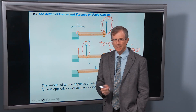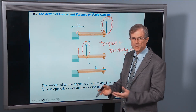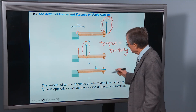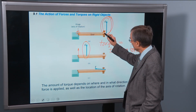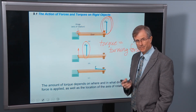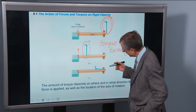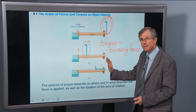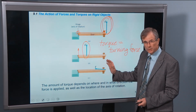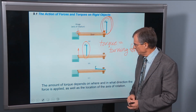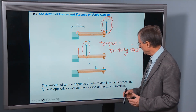That's a key hint for when torque is greatest. If you push perpendicular to the door, you get maximum effect. Whereas if you push at an angle on the end of the door, you're not going to get much turning force. So the amount of torque depends on where and in what direction the force is applied, as well as the location of the axis of rotation.